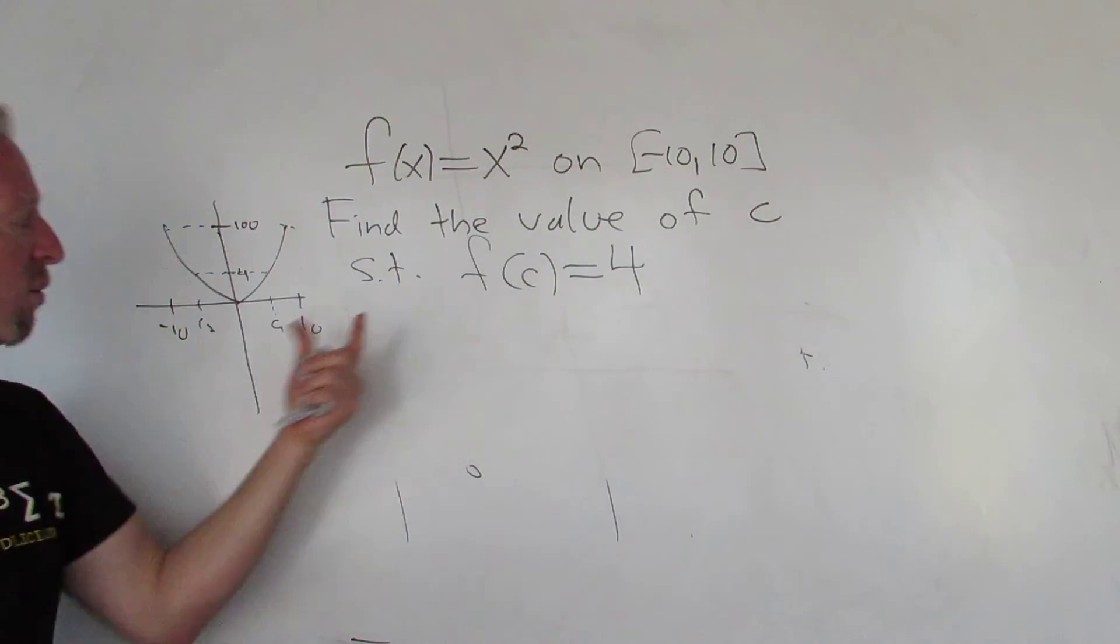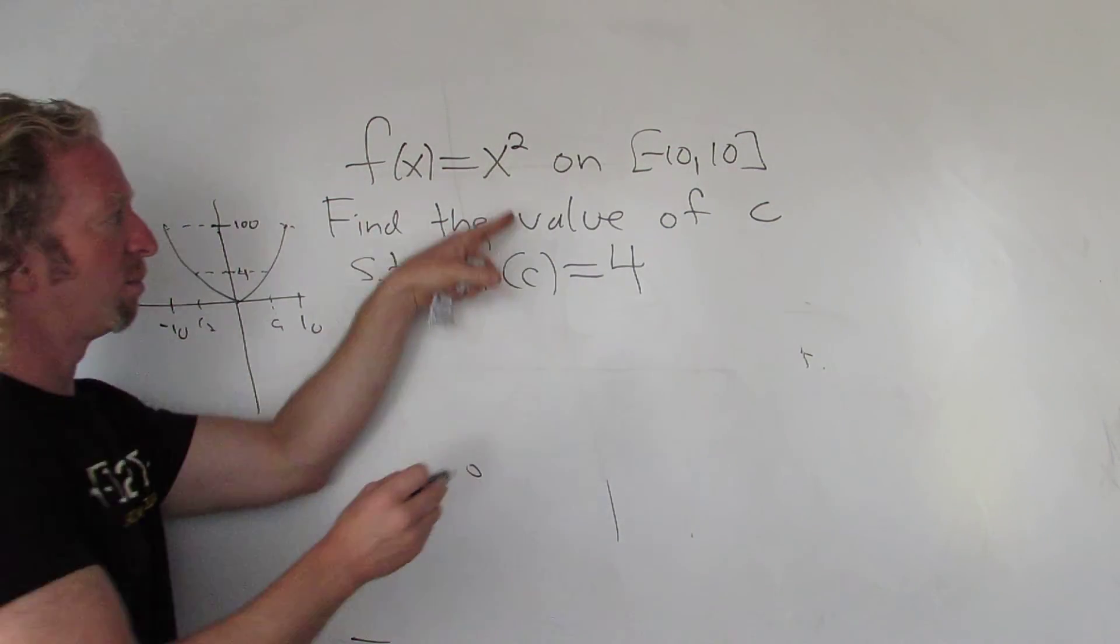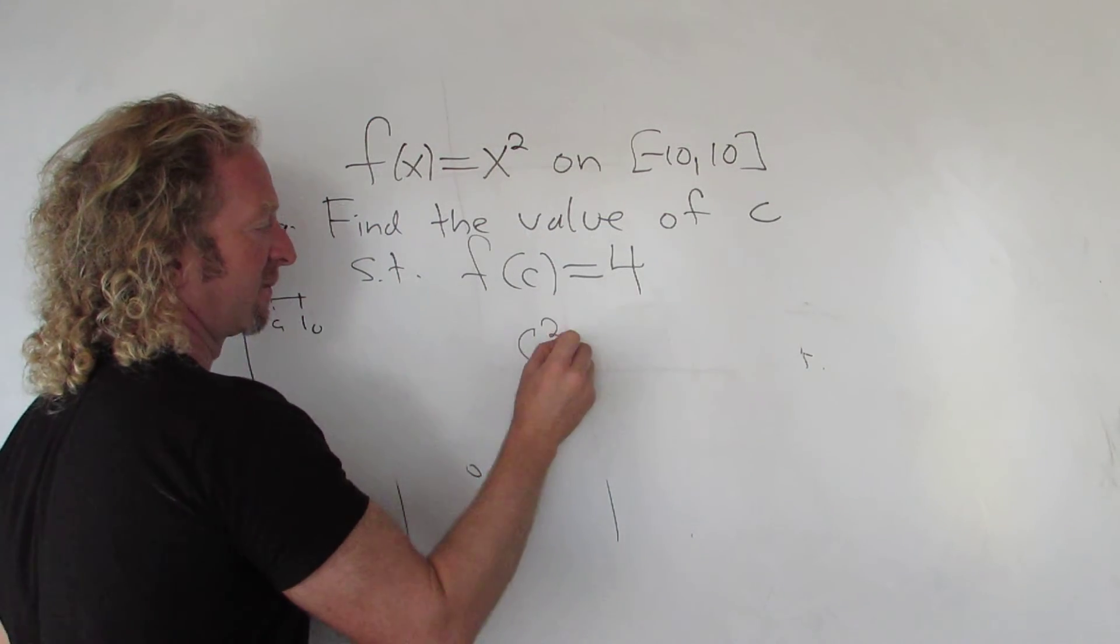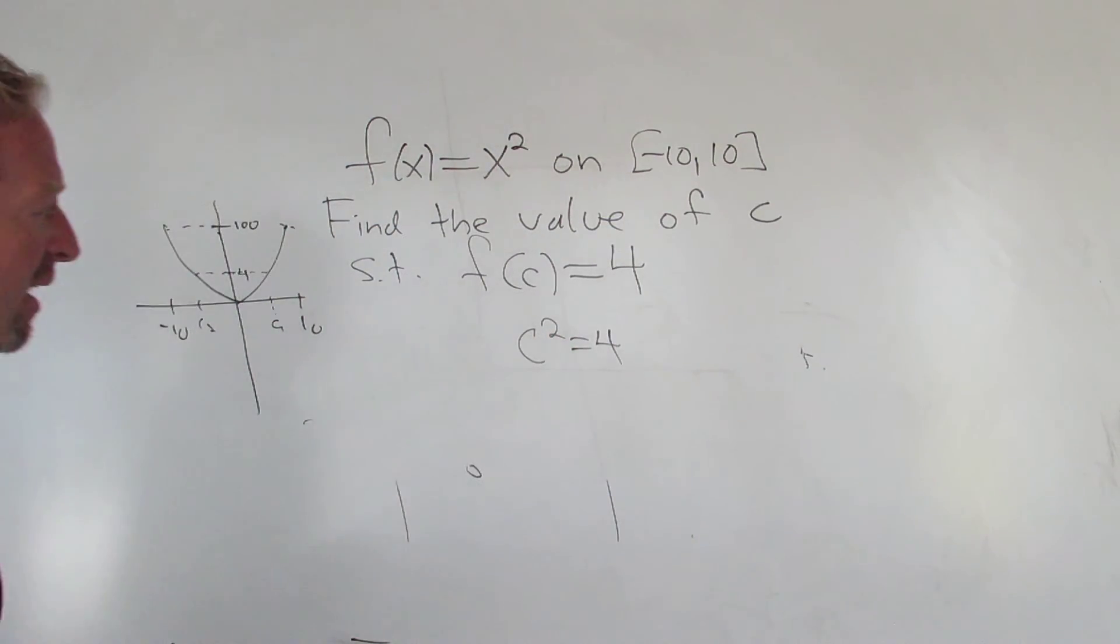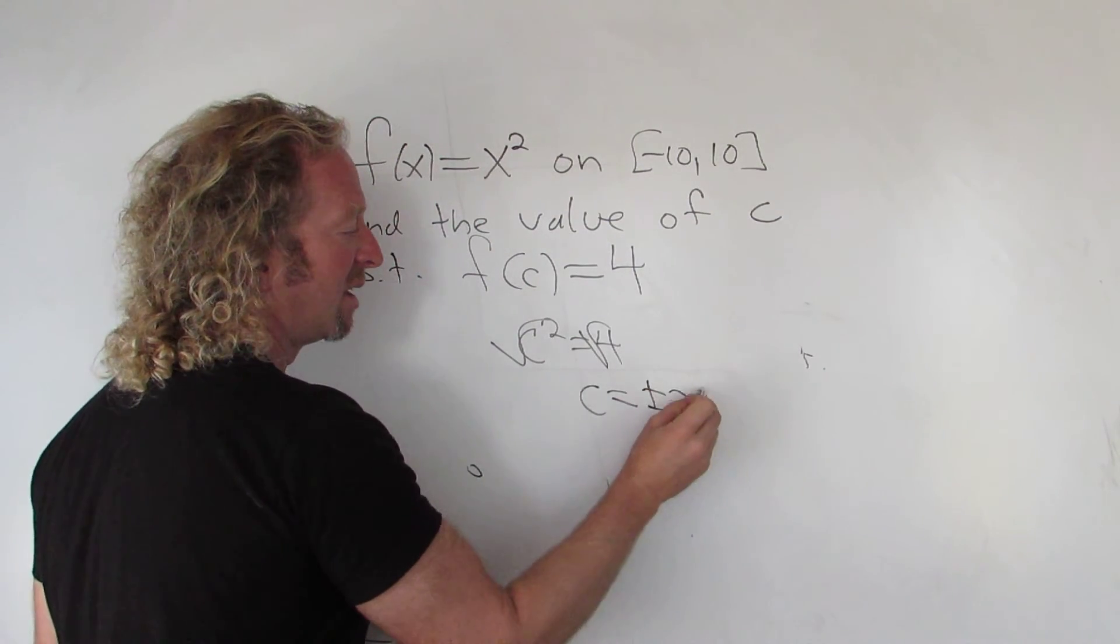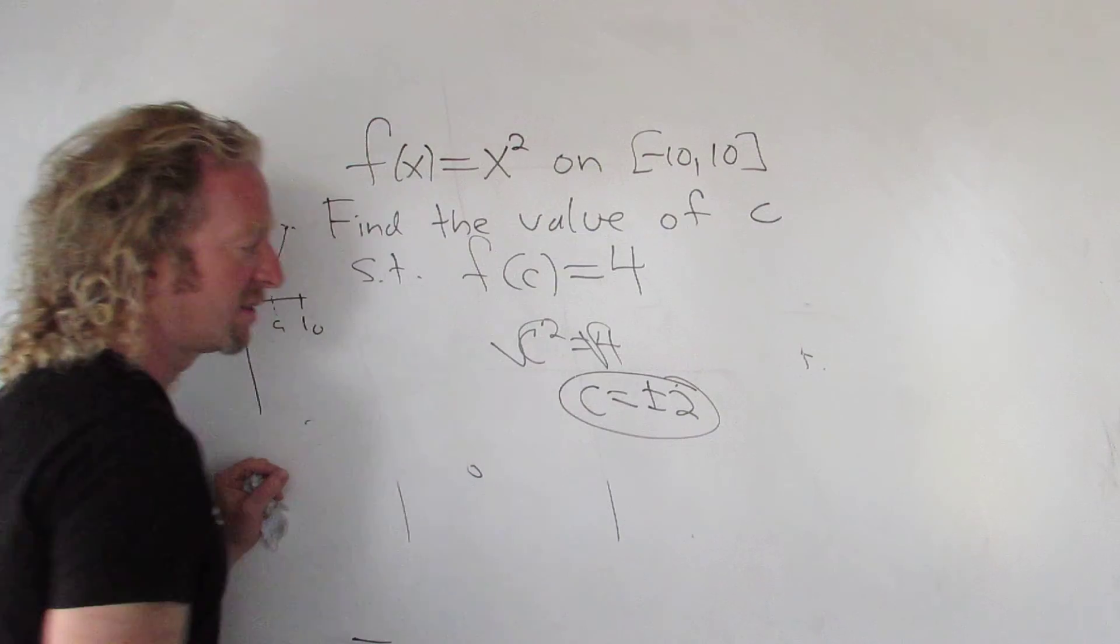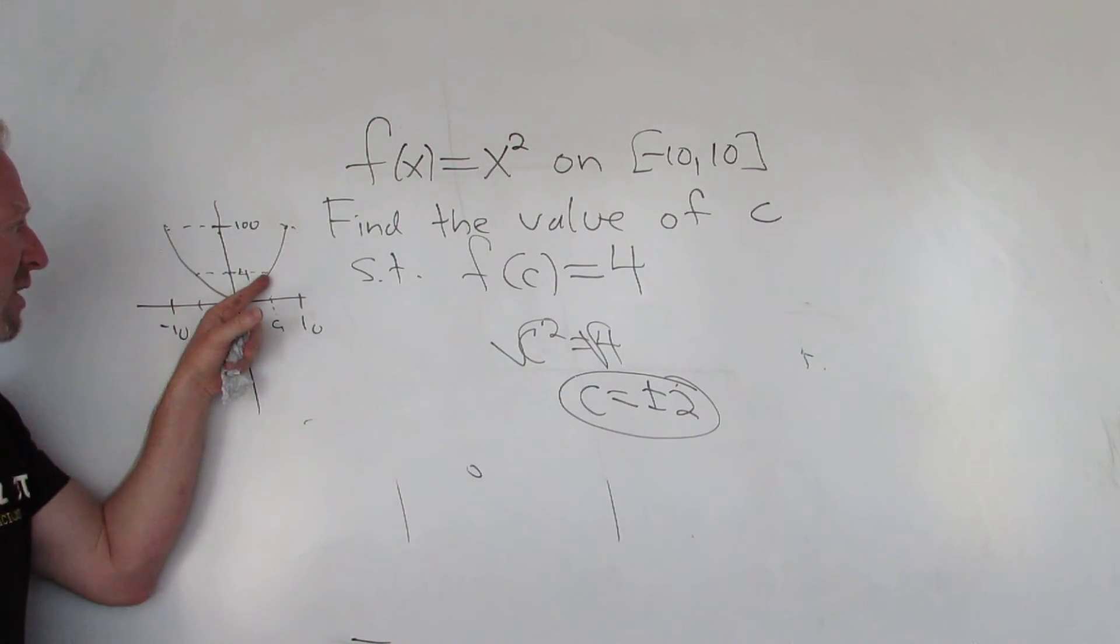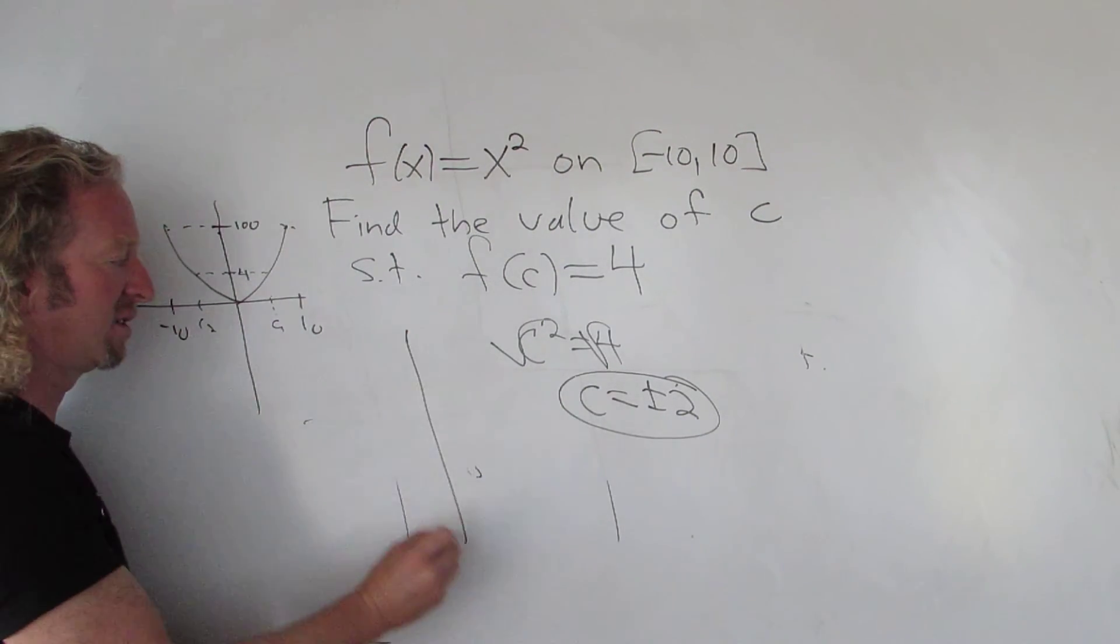Let's find those values. So how do you find these C values? Well, all you have to do is plug in C for your x. And then you just take the square root of both sides, and you get C equals plus or minus 2. So these are the two values such that F of those values gives you 4.